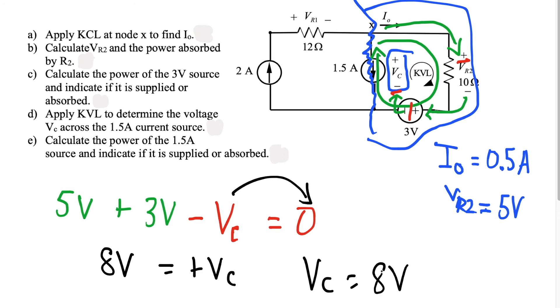So VC is equal to 8 volts. That's how we use KVL and isolate VC — the voltage across the 1.5 amp current source is 8 volts, determined using the right-side loop.